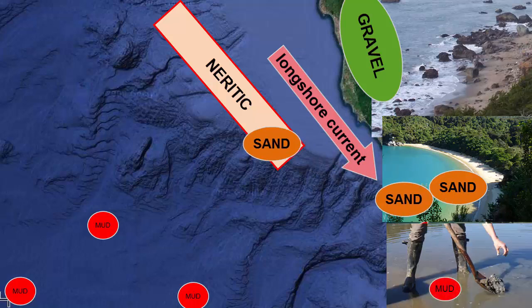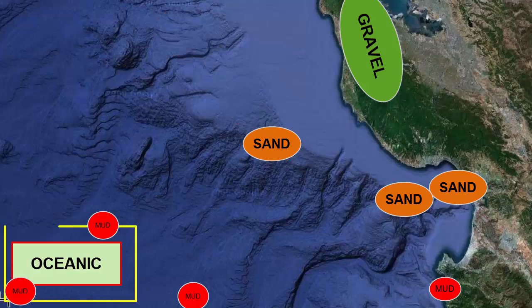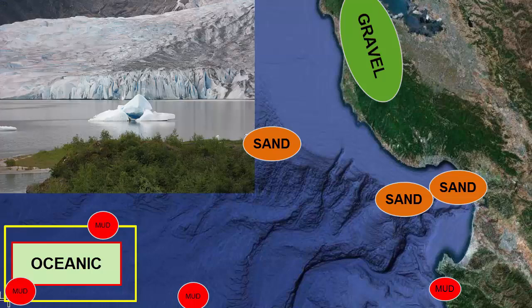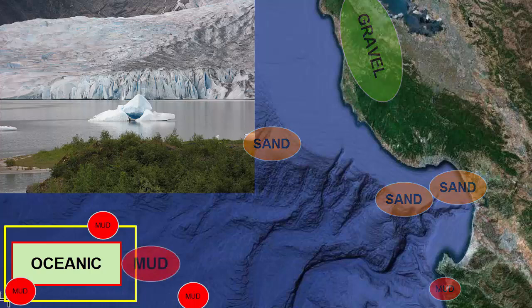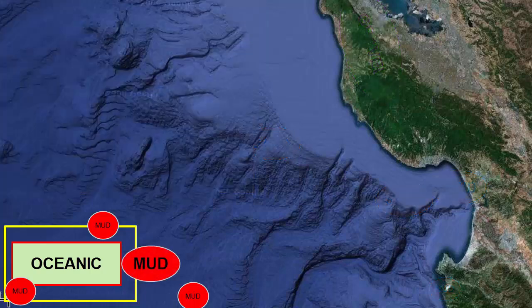Muds settle out only in closed-off, no-energy lagoons. Oceanic waters are deep with no currents that touch the bottom. Gravels and sands cannot be transported out here by anything other than floating icebergs, so the sediment that falls here is only the suspended muds.